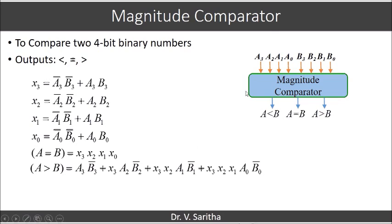The next case is when A3 and B3 are equal (X3=1), we compare A2 and B2, giving term X3·A2·B2'. Similarly, when X3 and X2 are both 1, we compare A1 and B1, giving X3·X2·A1·B1'. And the final case is X3·X2·X1·A0·B0'.